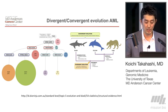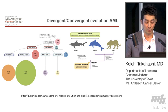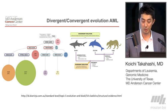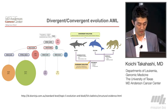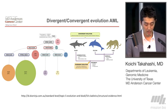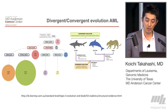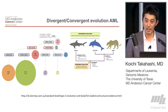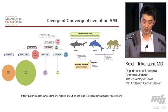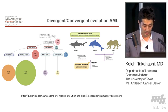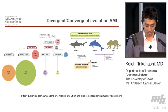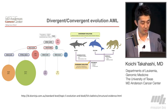So this really resembled the divergent evolution and convergent evolution that is observed in biology too, which really supports that cancer cells also have this Darwinian selection mechanism to create their clonal architecture.